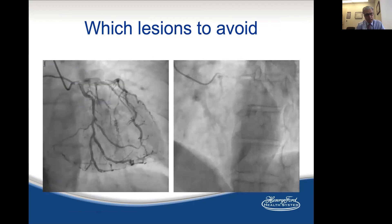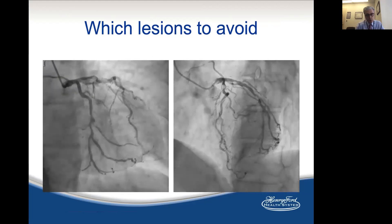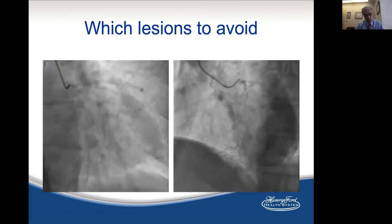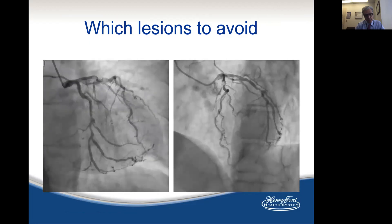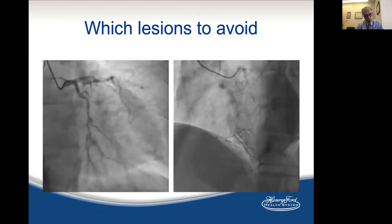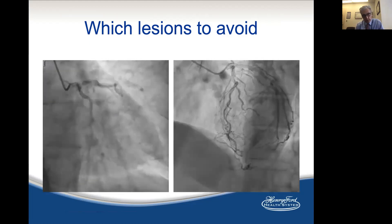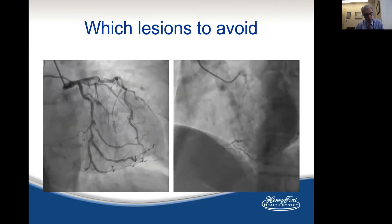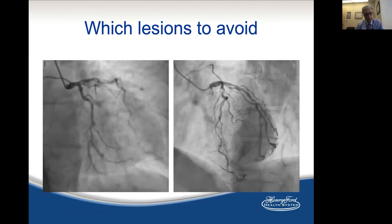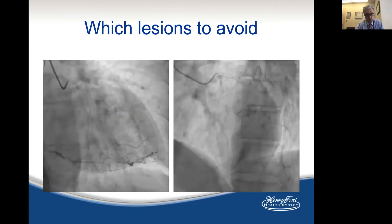So which lesions to avoid? I think tortuous and eccentric lesions, especially if you need front cutting, should move to a different device — rotational atherectomy or even a cutting balloon. If you have to wedge the crown between a nodule of calcium and the non-calcified wall, that may cause a perforation, especially if there is tortuosity.